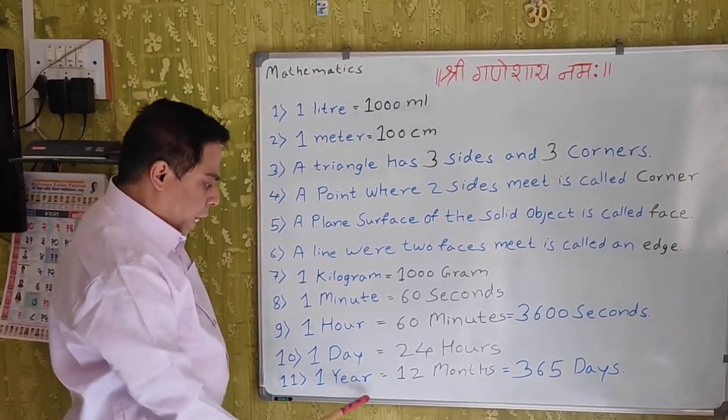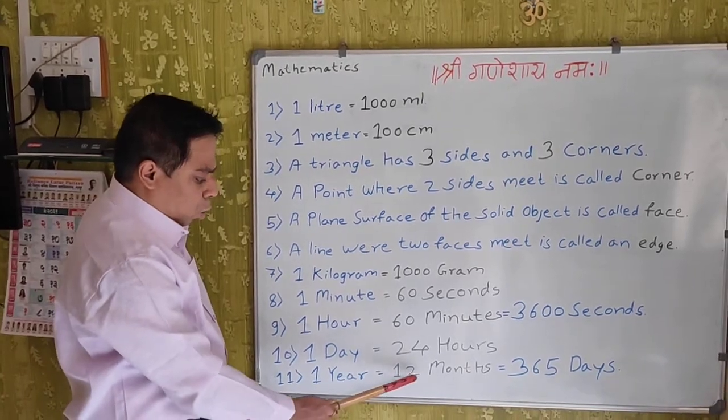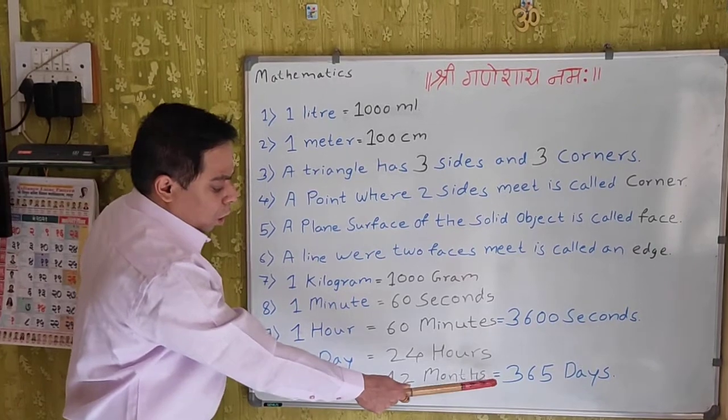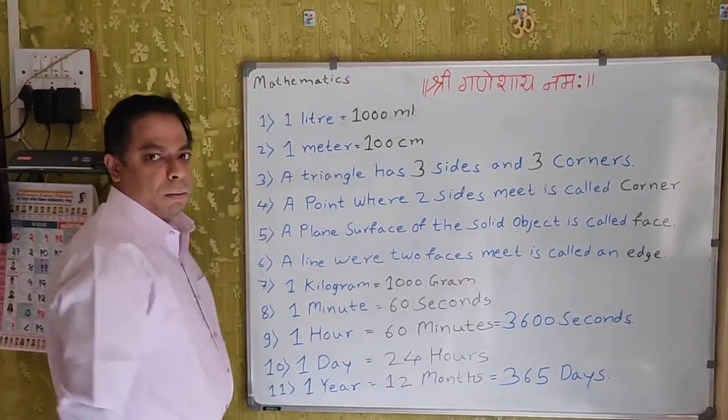1 year is equal to 12 months is equal to 365 days.